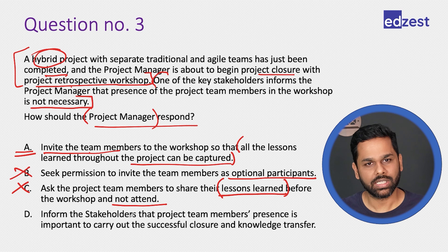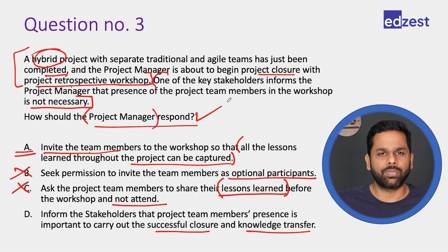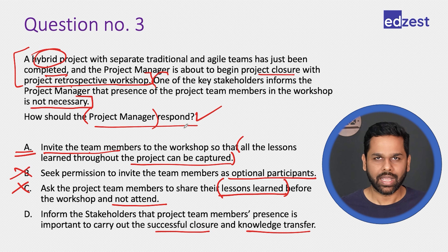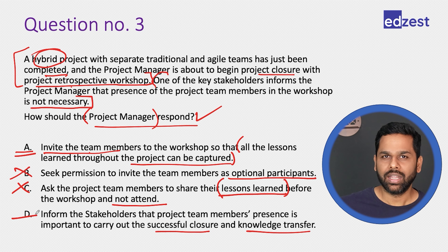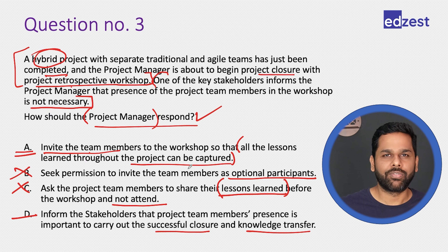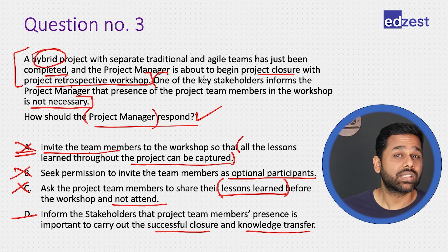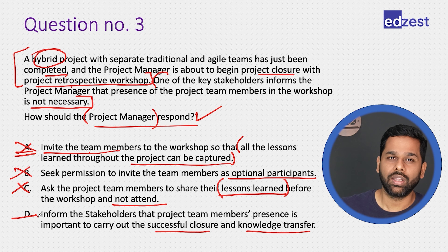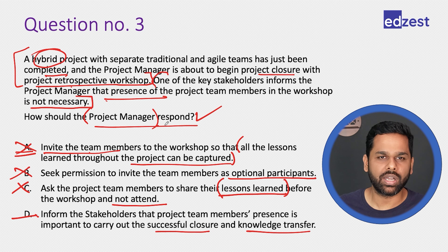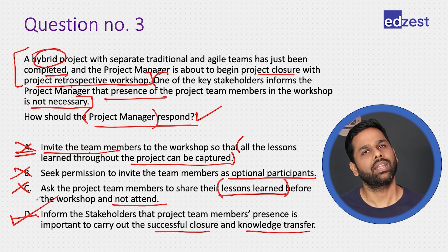Also, option C is not taking care of the concern raised by the stakeholder. Option D: inform the stakeholders that the project team members' presence is important to carry out successful closure and knowledge transfer. Yes — this is how I should respond. If somebody is asking me to do something which is not the best thing for the project, I would tell them that this is not the right thing to do. Rather than finding a workaround, we directly communicate. D is better than A.